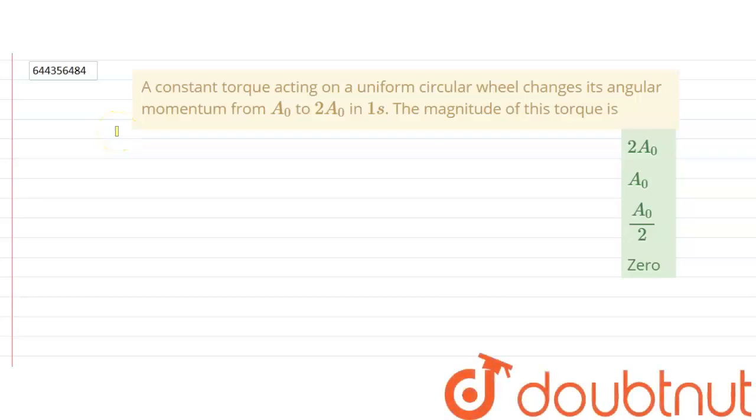Hello, the question says a constant torque acting on a uniform circular wheel changes its angular momentum from A0 to 2A0 in one second. The magnitude of the torque is, four options are given. We have to check which option is correct.